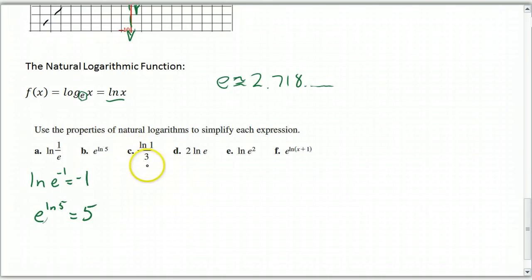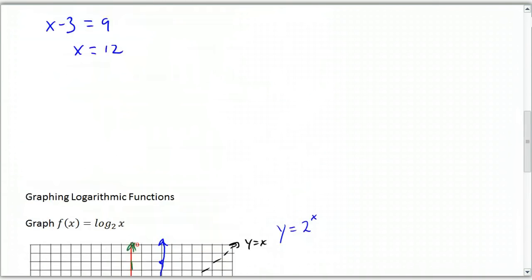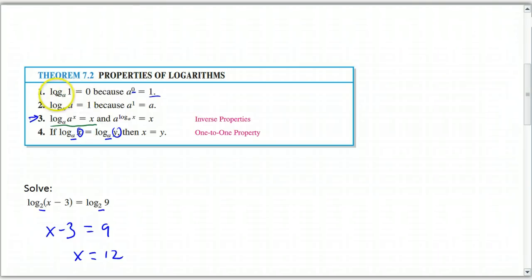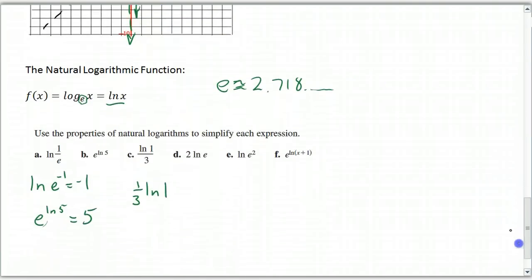Okay, how about 1 third the natural log of 1? Well, let's go back to our properties. Remember what the log of any base 1 is? It's always 0.